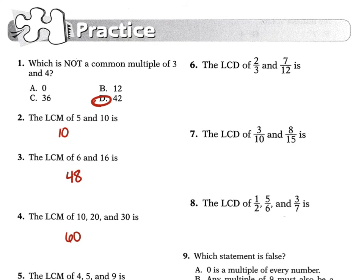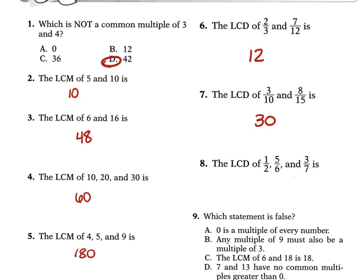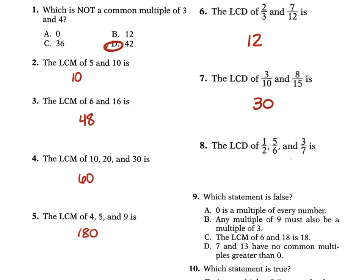For problem 6, finding Least Common Denominators: the LCD of 2 thirds and 7 twelfths is 12. The LCD of 3 tenths and 8 fifteenths is 30. The LCD of 1 half, 5 sixths, and 3 sevenths — with denominators 2, 6, and 7 — is 2 times 3 times 7, which gives 42.